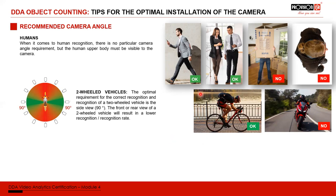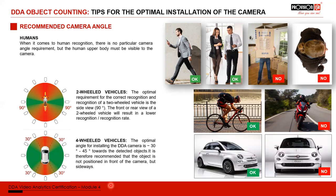For two-wheel vehicles, side detection is best, similar to humans, though a slight angle is also acceptable. For four-wheel vehicles, the camera can detect from a range of 30 to 45 degrees, giving a lot of flexibility. Unlike humans, vehicles can actually be captured from directly above — so if you place a camera on top of a parking lot entrance, it will work for vehicle counting.